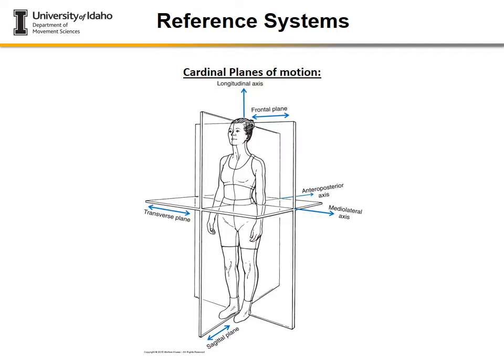Essential to describing human motion is understanding that we have three orthogonal planes of human motion, each with a corresponding axis that intersects the plane at 90 degrees. The three components are the sagittal plane, transverse plane, and frontal plane. The sagittal plane divides the body into left and right hemispheres and is intersected by the medial-lateral axis. The frontal plane divides the body into anterior and posterior components and is intersected by the anterior-posterior axis.